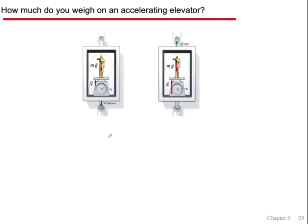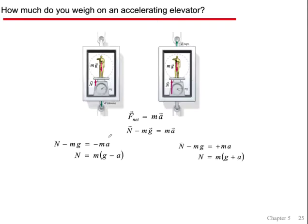How much do you weigh in an accelerating elevator? It's just the normal force minus the force of gravity equals mass times acceleration. If you're accelerating downward, the normal force is going to be m(g − a). If you're accelerating upward, it's going to be m(g + a). You've felt this in an elevator accelerating upward — the normal force is larger than your weight. If you're accelerating downward, the normal force is smaller, and it feels like your stomach's going up.